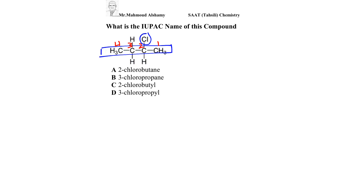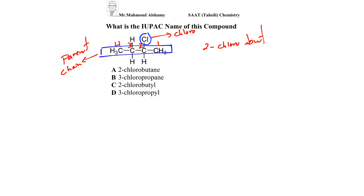If you start from the left it would be position three. We have a chloro substituent. I'm going to start from the right because we need the lowest number for the carbon position, so it's going to be 2-chloro. The basic chain has four carbons, which is called butane since all bonds are single. So the name is 2-chlorobutane.